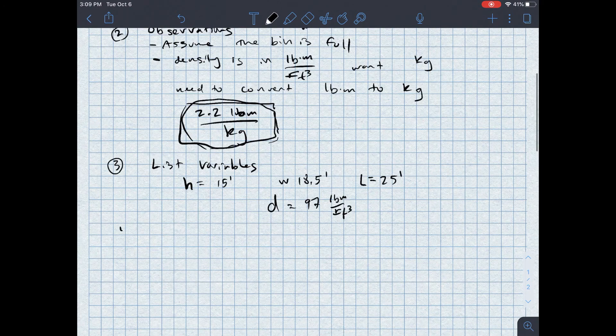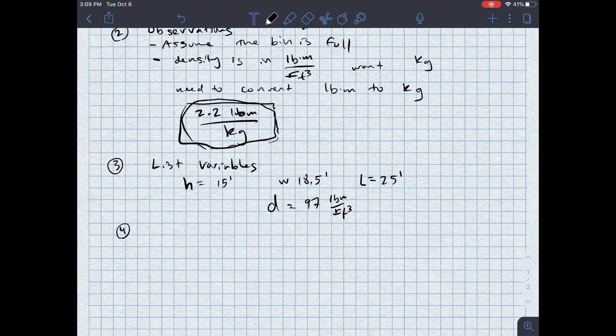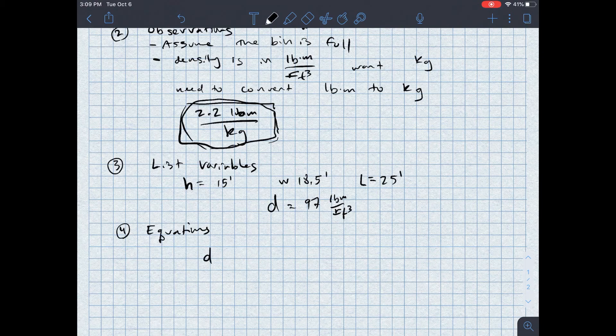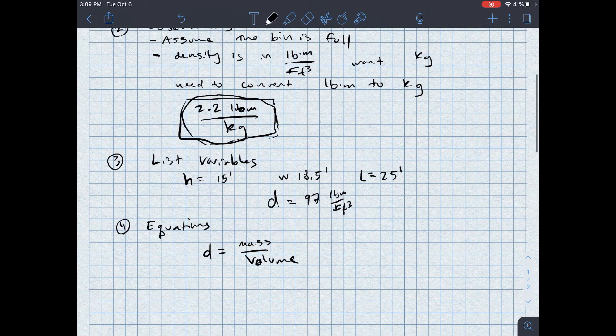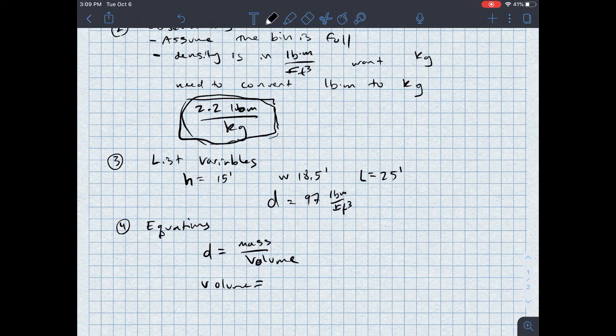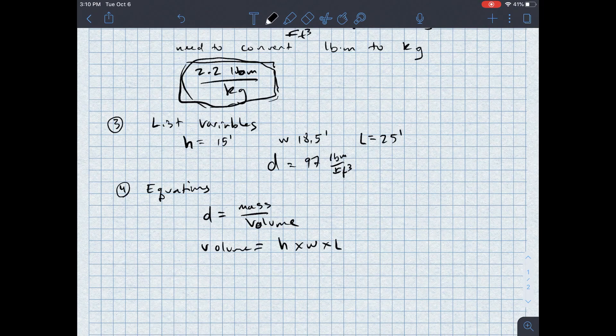Step four is equations. So the equation that I'm going to want here, first, is to know that density, D, is equal to mass over volume. Secondly, I know that the volume is equal to the height times the width times the length. So those are the important equations that I have here.